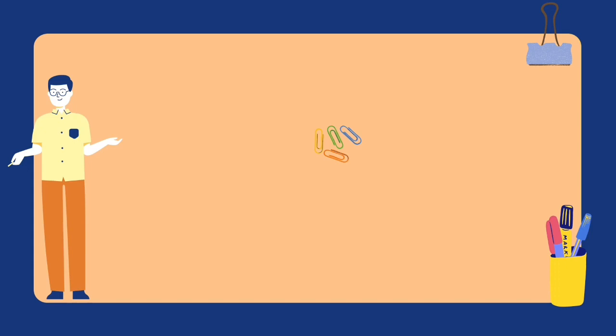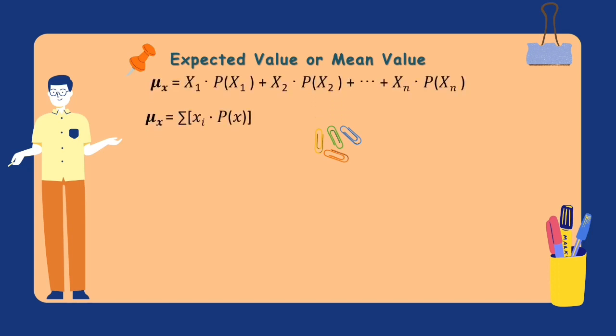Let's learn the formula of the mean, variance, and standard deviation in order to solve the following problems. The first one is the expected value or mean value. The expected value or mean of a probability distribution, denoted by x, is computed by multiplying each possible x value by the probability of observing that value and then adding the resulting quantities. Where x is the value of the random variable, P(x) is the probability that a random variable will have an outcome, and mu is the symbol for the mean.